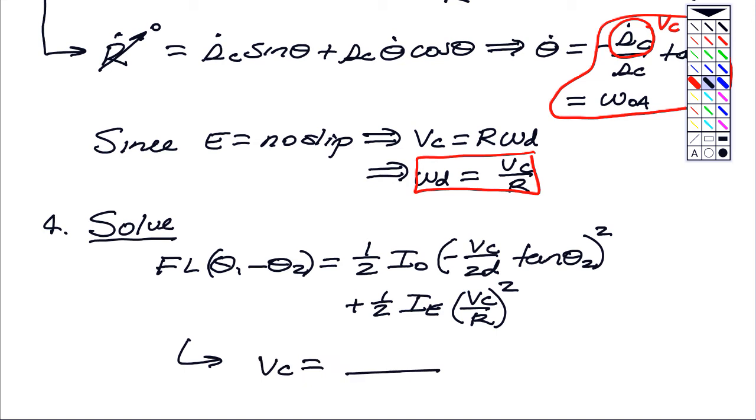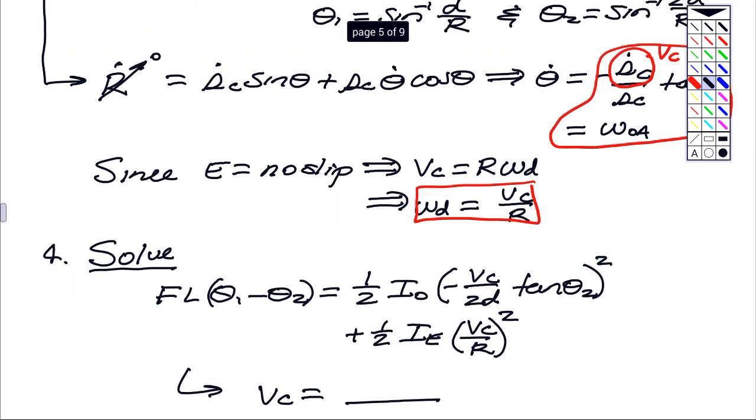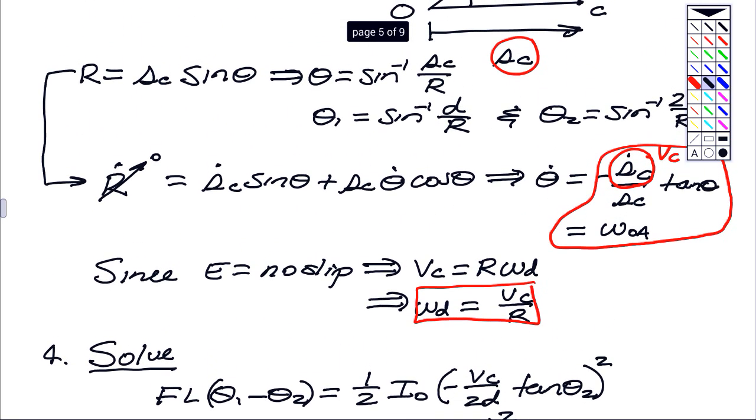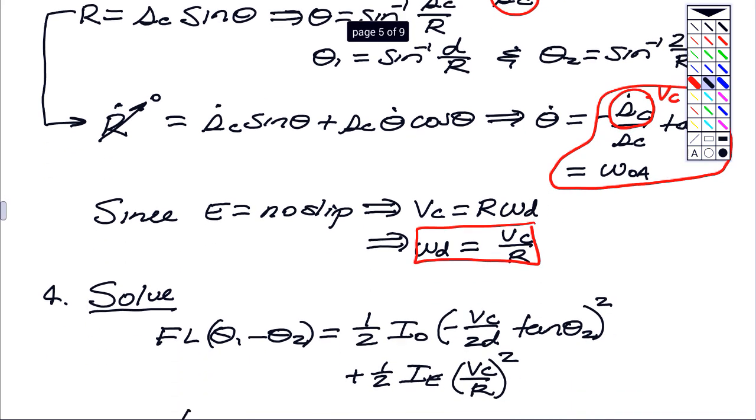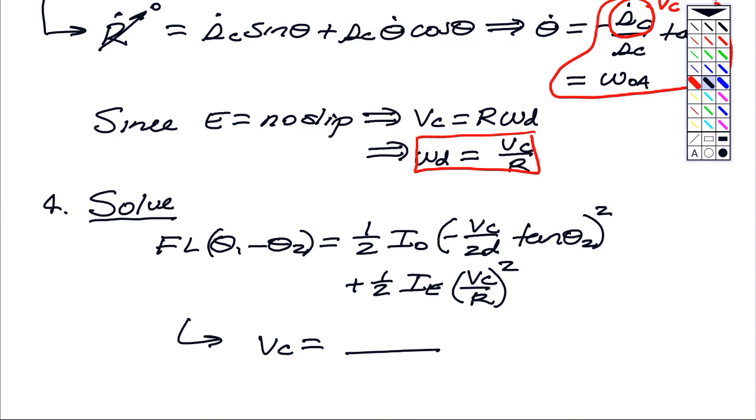So the basics here is that we use the work energy equation, because that relates position to speed. We write things down in terms of T, we find the work due to the applied force F. The kinematics here is a very important part, and the kinematics were needed to be able to relate the omega OA back to the speed of C, the omega for the disk back to C, and that was able to give us our single equation in terms of the single unknown of Vc.